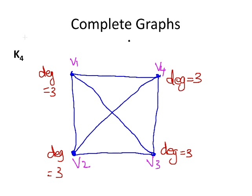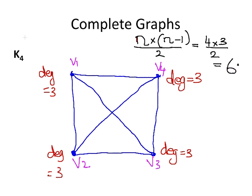So let's just double check now. N is the number of vertices, and each vertex has degree N minus 1. And we're going to divide that by 2. So in this case, we'll have 4 times 3, all over 2, which is 6. And we do actually have 6 edges. So this looks promising.